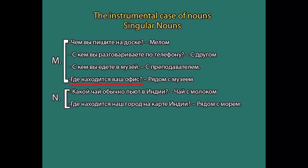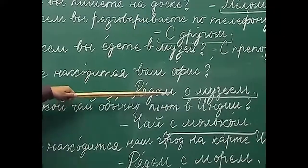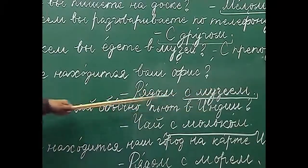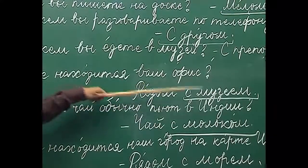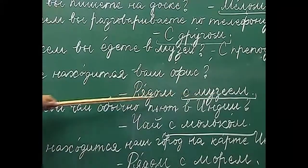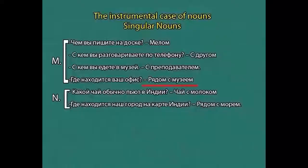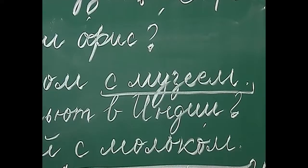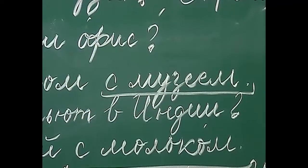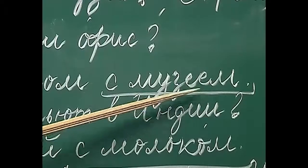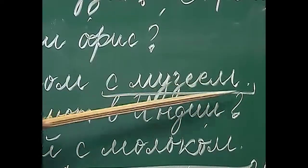The next example: 'где находится ваш офис?' — where is your office located? The answer uses the expression 'рядом с' which means 'besides' or 'near'. So: рядом с музеем — near the museum. After 'с' we use the instrumental case. Музей again has a -й (и краткое) ending. For a masculine noun with an и краткое ending, we drop и краткое and add -ем: музей becomes музеем.